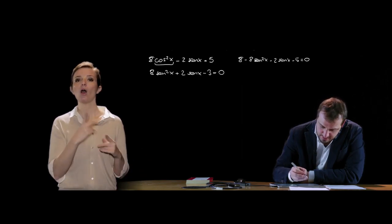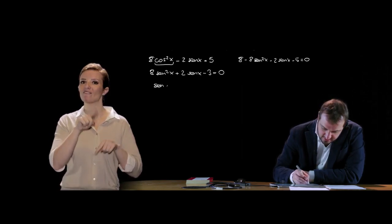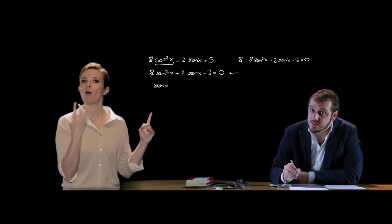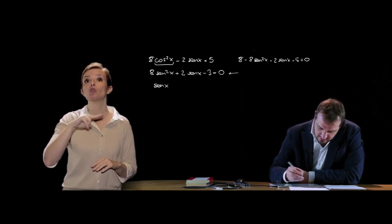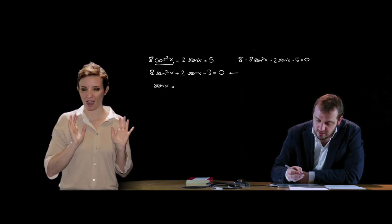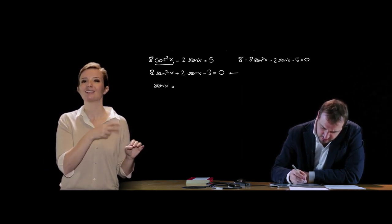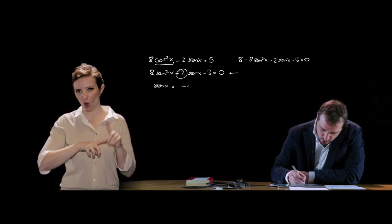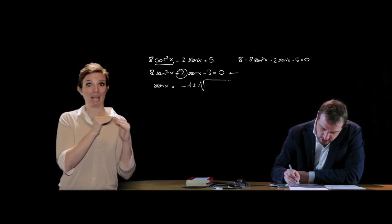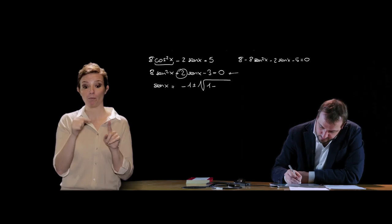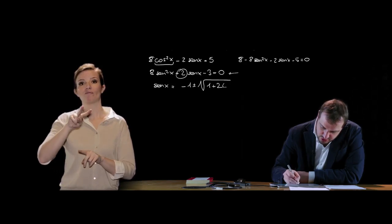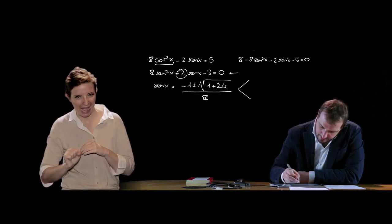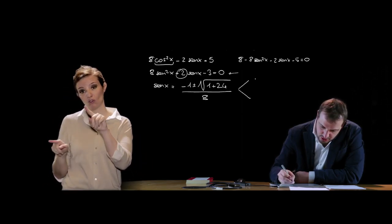Utilizzando il seno come variabile ausiliaria, possiamo trattare questa come un'equazione di secondo grado algebrica. Usiamo la formula risolutiva ridotta poiché b è pari: sen x = (−1 ± √(1 + 24)) / 8, dove il termine sotto radice è 1 + 24 = 25.